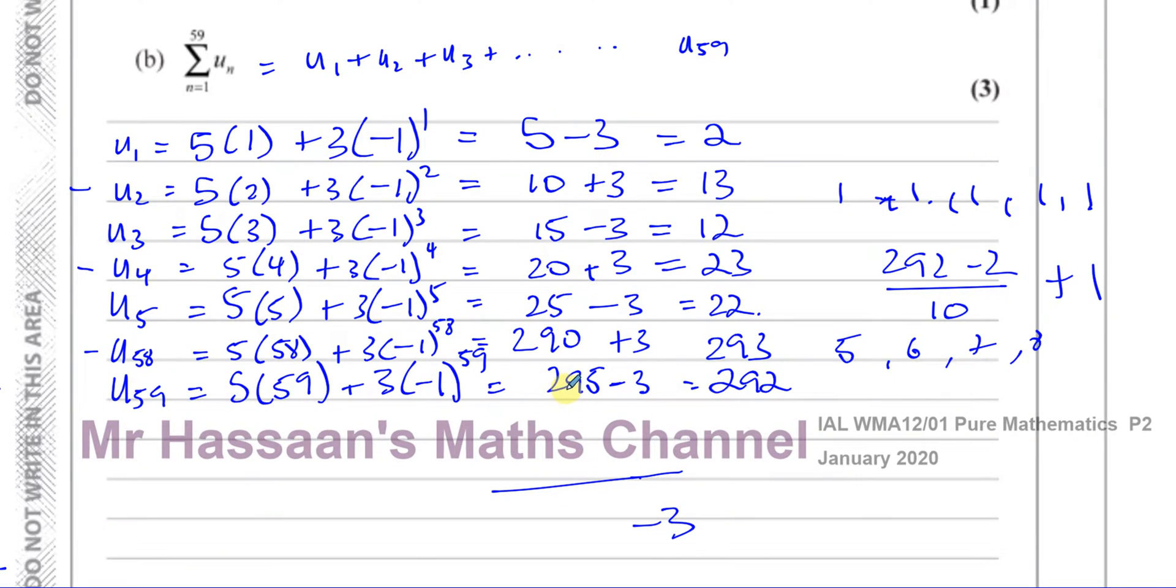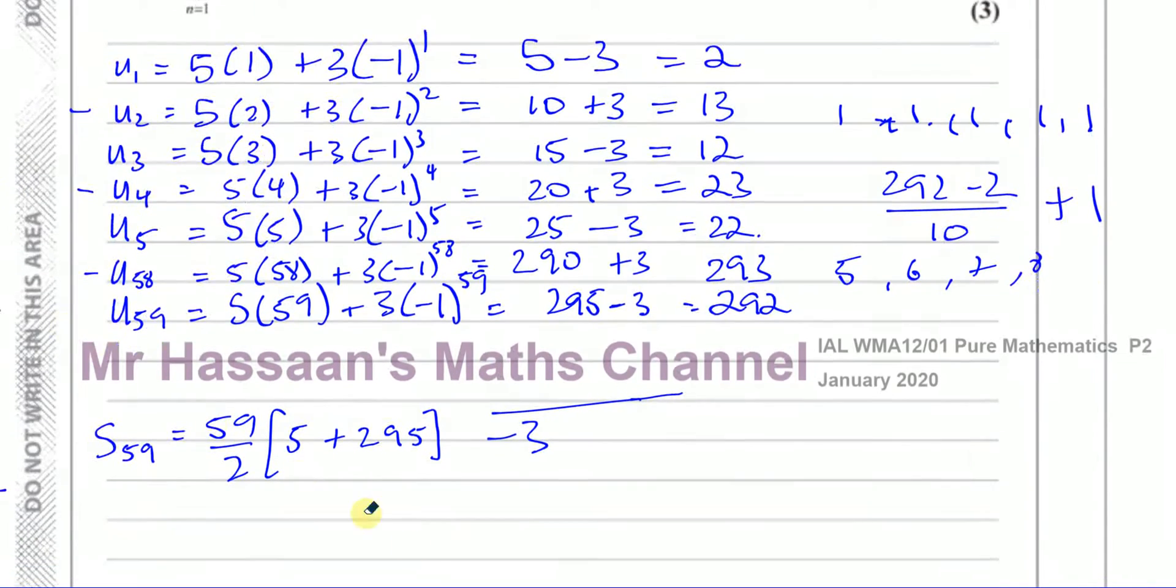We know that there's 59 terms, so we could use the sum of the first 59 terms is going to be 59 over 2 times the first term which is 5 plus the last term which is 295. Then we can take away 3 from that, and that should give us the same answer, which is 8847 I think it was.